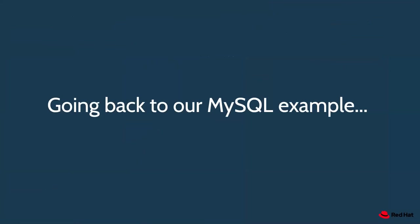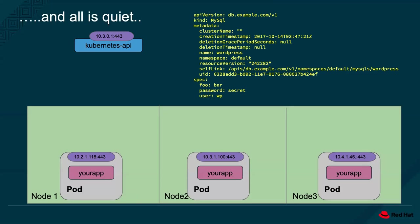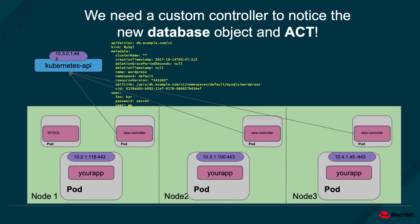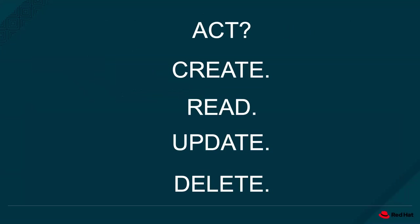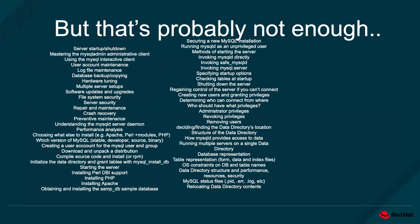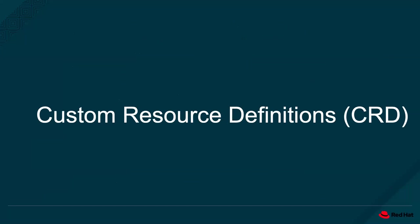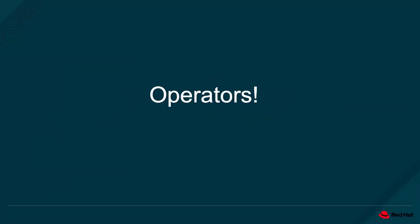Going back to our MySQL example, we need a controller. Without a controller, everything is quiet in our cluster — we just have an object on the API. We need a custom controller to notice the new database object and act. Being a MySQL admin is very intense with a lot of tasks and operational knowledge you need to maintain. This is all the stuff you have to build into your operator so you don't have any manual intervention. To recap: custom resource definitions, custom controllers, and your knowledge equal operators.